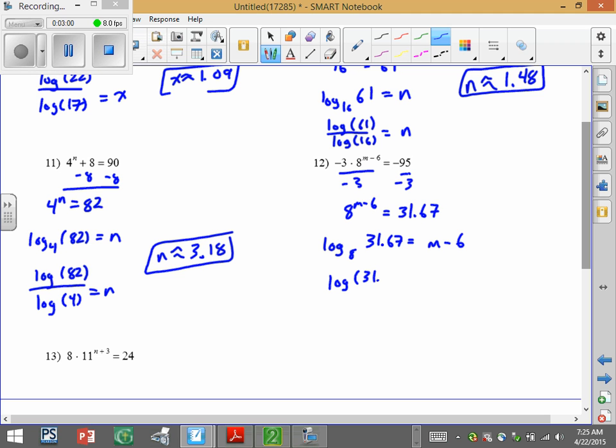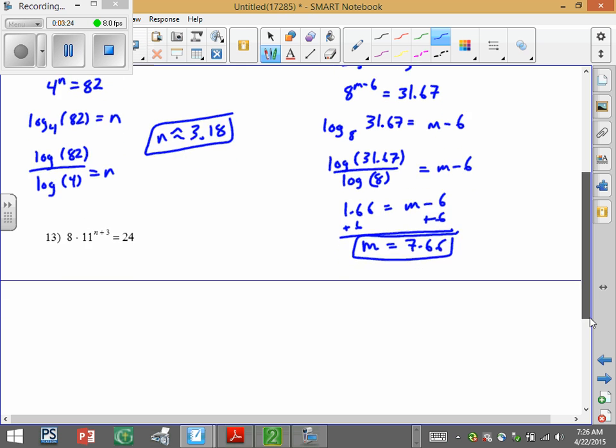So you change of base, 31.67 over log of 8 equals n minus 6. So we have 1.66 equals n minus 6. And then we have one more step. We're going to add 6 to both sides. And then we have n equals 7.66. So there's one where you had to do a little bit of work after taking the log.